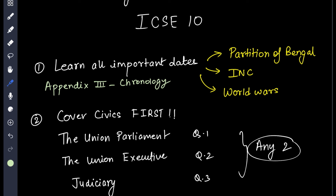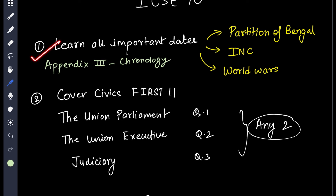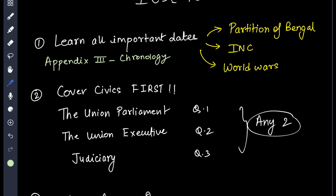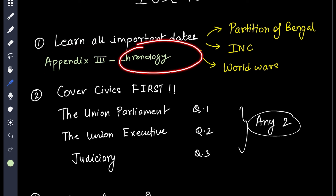First of all, let's talk about dates. Learn all the important dates. Appendix 3, which is given in the last page of your book, is the chronology of dates. You can refer to that. All the important dates and years are given in chronology there.